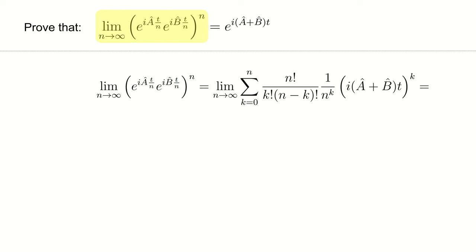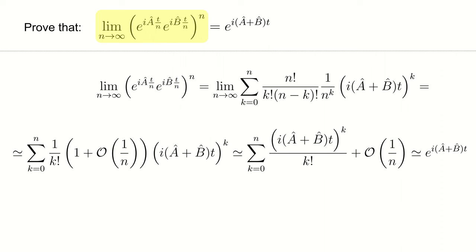So, we have everything we need to prove Trotter's formula. We use the asymptotic behavior from the previous slide and Maclaurin series for the exponential function. Eventually, we get the equality we need to prove.